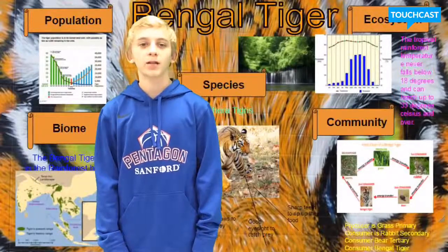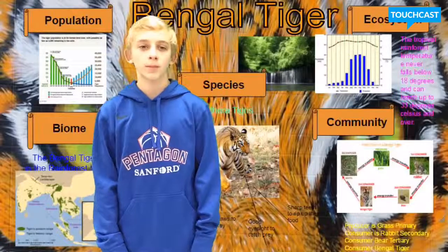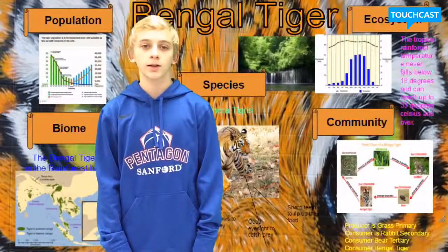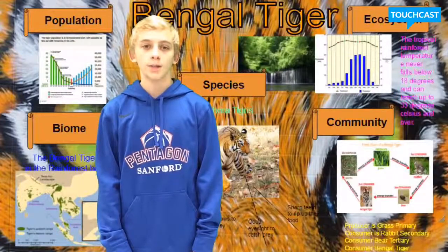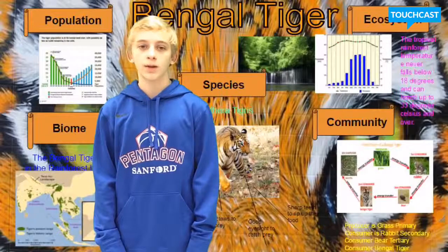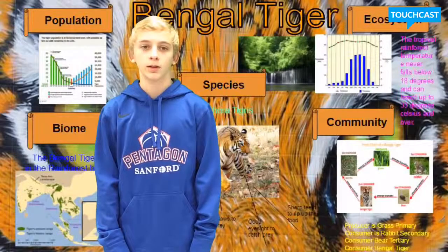A Bengal tiger is a special top predator, which means they hunt anything that has meat and have no natural enemies — nothing that will kill them besides humans.